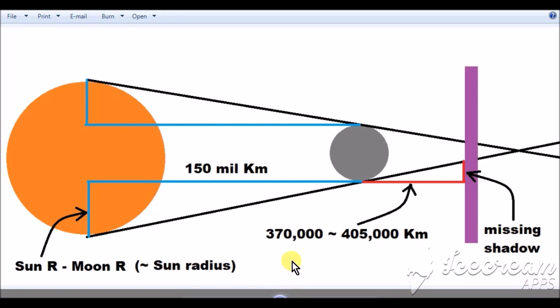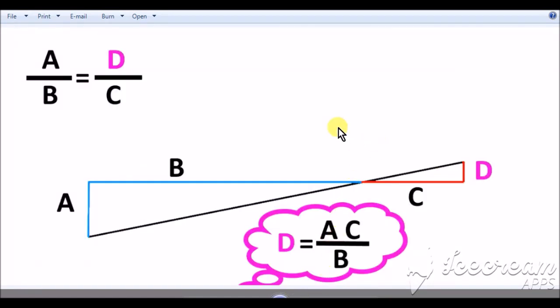So back to our diagram, we know this one, we know this one, we know this one, so we are remaining with this one. This is the one that we want. And very basic geometry, the ratio of A and B is equal to the ratio of D and C, like this. So we can very simply get D, or the missing shadow, by this simple equation.